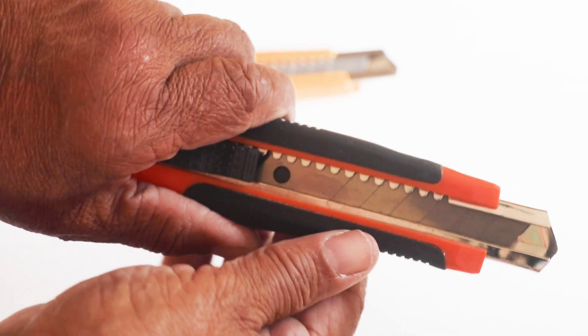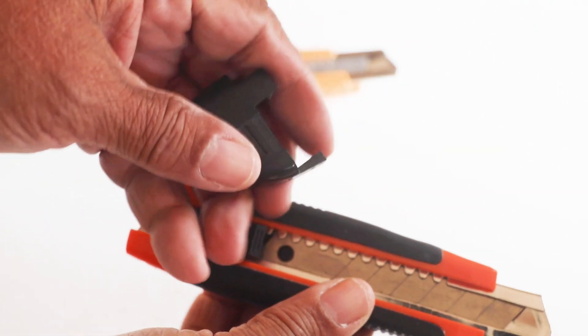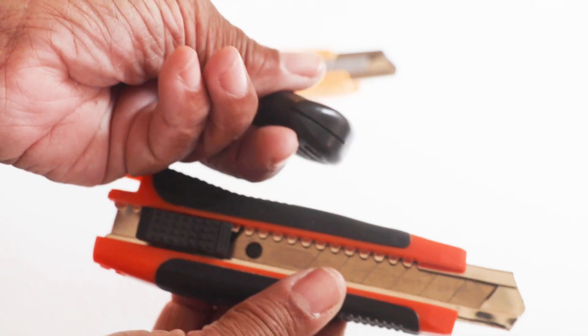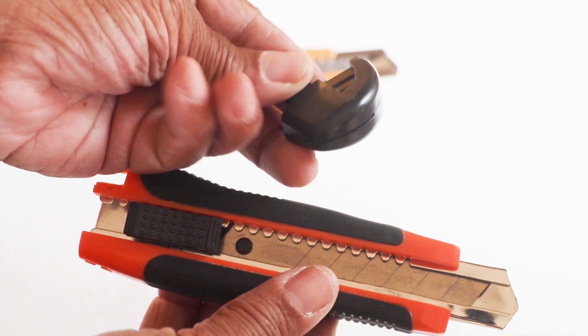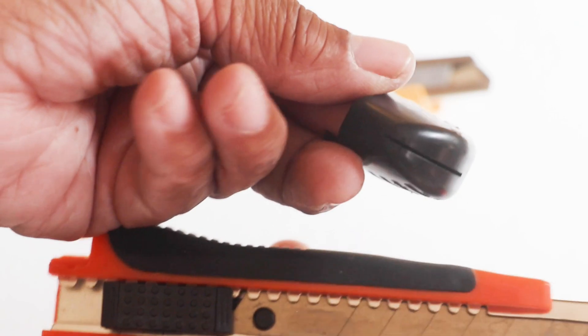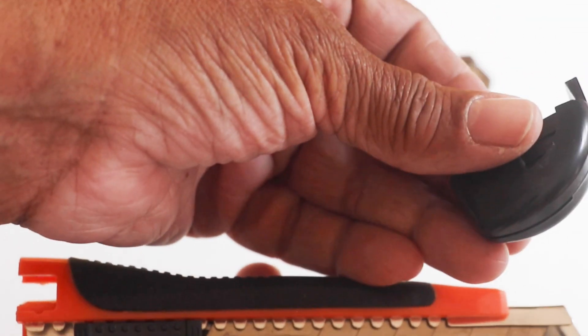Now these style utility knives, they're all the same. They all have the handle that removes and have that little slot right there in the handle to remove the blade.